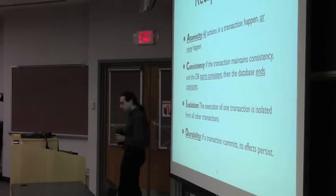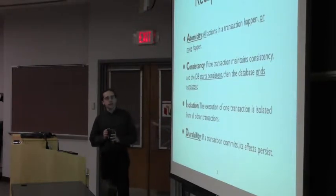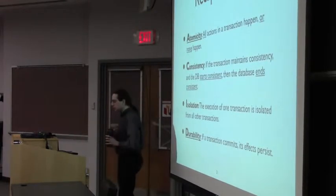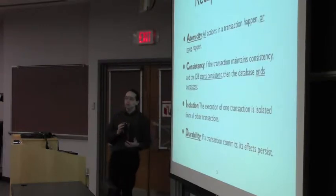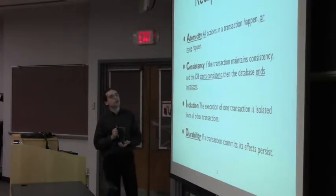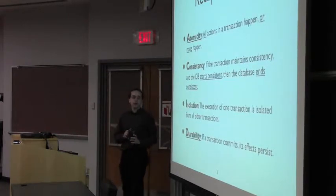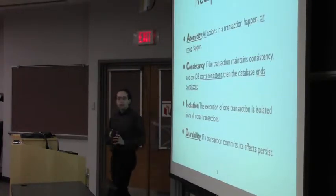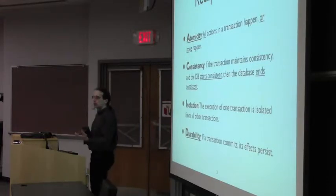So just to recap, the primary goal of transactions is to provide a set of guarantees commonly referred to as ACID. You want every action of a transaction to either happen entirely or not happen at all — that's atomicity. You want consistency, so if the transaction itself preserves the consistency of the database, then no interleaving of transactions should violate consistency. Isolation: a transaction's execution should be entirely independent of all other transactions. And durability: if we receive an assurance that a transaction has committed, then it had better persist any crash or failure.